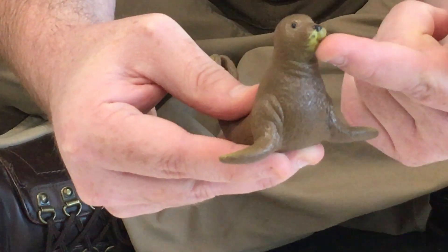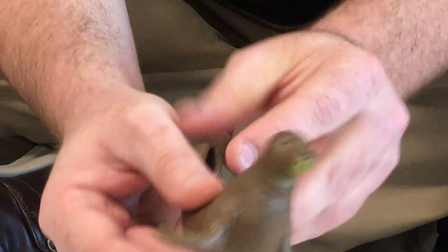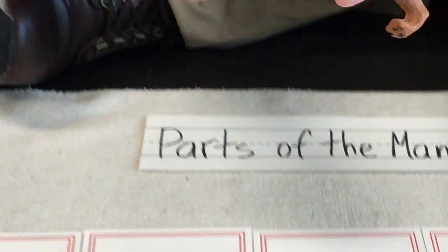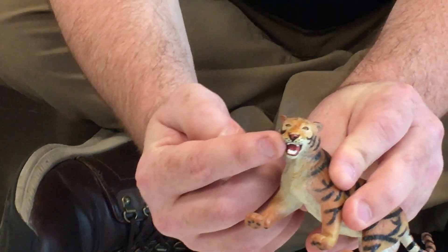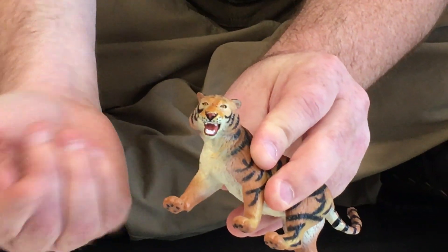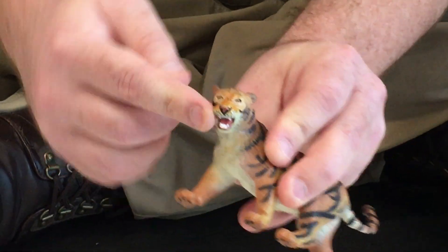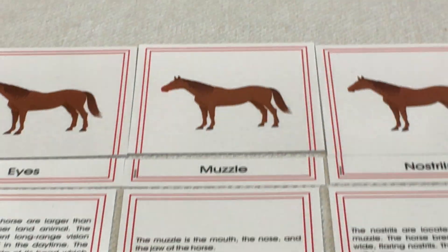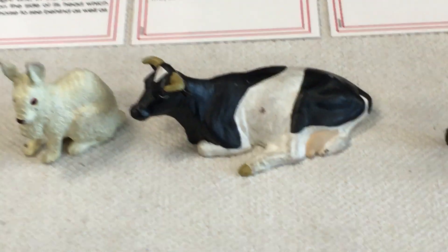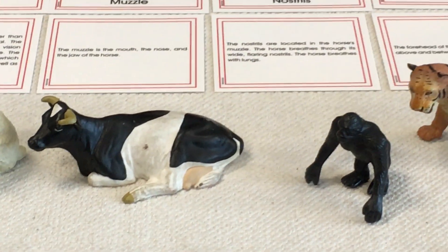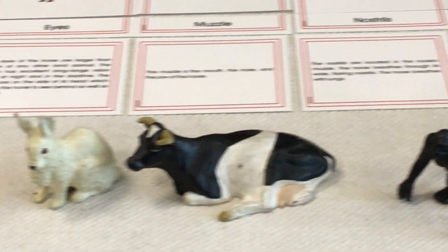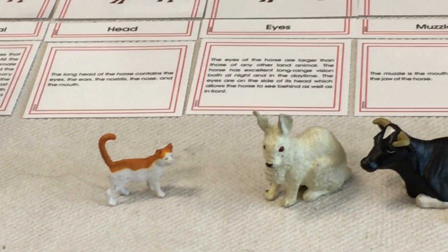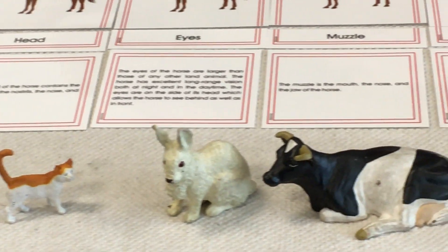For all other types of animals, they have the same type. The muzzle of the seal has the nose and the mouth — the same things. Even the muzzle of a tiger — we do call it the muzzle still — it's the mouth, and has all the same parts. Same thing with monkeys, cats, and bunny rabbits; they all have a muzzle that houses their nostrils, mouth, and teeth.